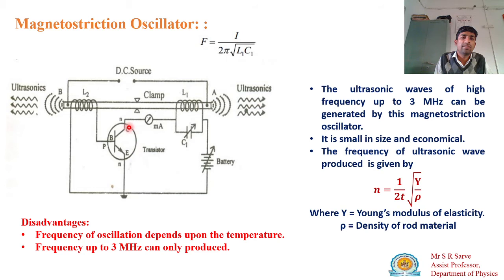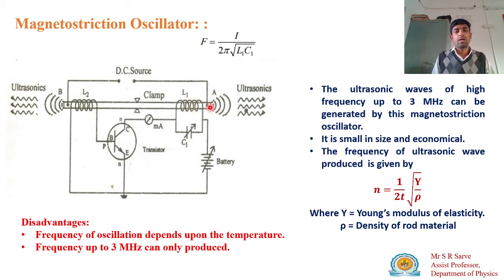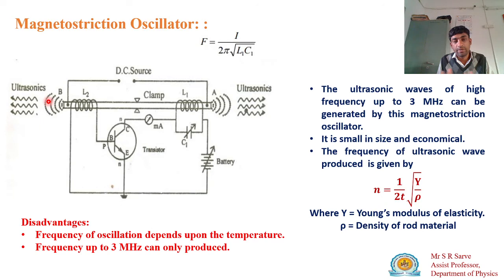This is the circuit diagram for the magnetostriction oscillator. It uses a transistor connected through the ferromagnetic rod via inductor L1 and a varying capacitor C1. Inductor L2 is connected to the base of the transistor. Together, L1, L2, and C1 form a resonant circuit. The primary and secondary coils produce an induced EMF, which generates a magnetic field, causing the ferromagnetic rod to compress and elongate at a very high frequency of around 3 million Hertz, producing ultrasonic waves.